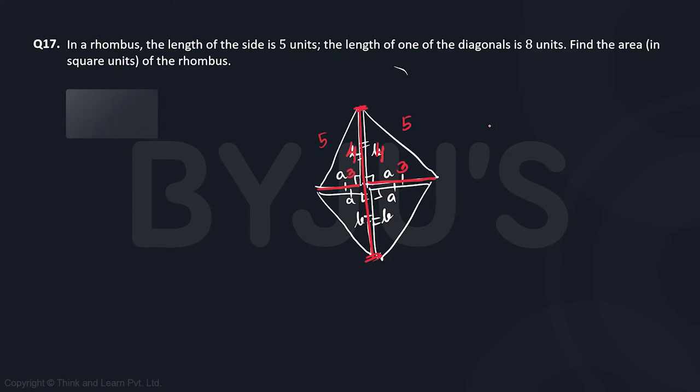So we have now a rhombus whose one diagonal is eight, length right, four above, four below. And the other diagonal is of length three and three, which is going to be six.